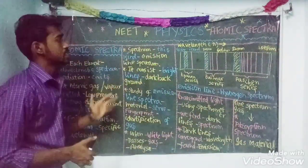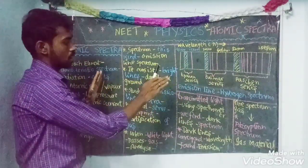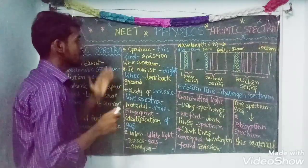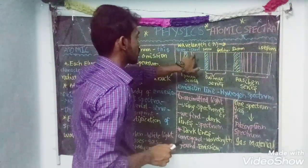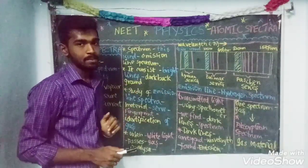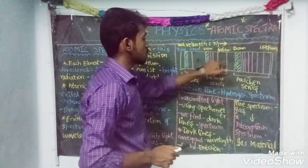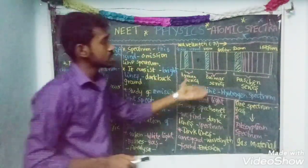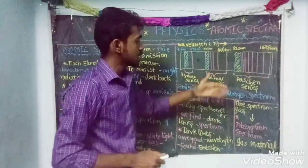So friends, this is the atomic spectrum — this is hydrogen. The range of 91 to 122 nanometers: what series is that? That is the Lyman series. The range of 365 nanometers to 656 nanometers: what series is that? That is the Balmer series. The range around 820 nanometers: that is the Paschen series.